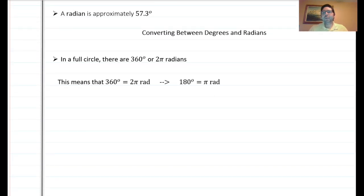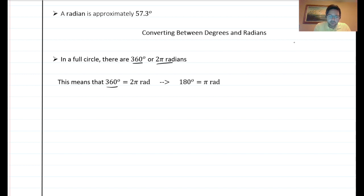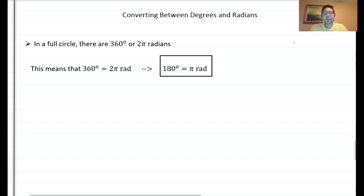To convert between degrees and radians, remember: a full circle is 360 degrees and also two pi radians. So 360 degrees equals two pi radians, which means 180 degrees equals pi radians. Think of pi as 180 degrees. This is your key conversion factor.